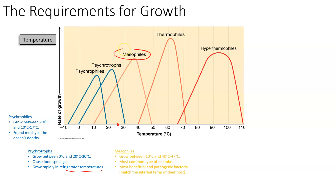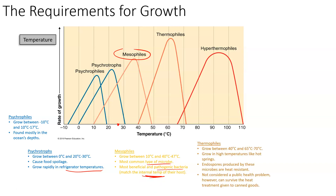Mesophiles grow between 10 and about 47 degrees Celsius. They are the most common type of microbe, and they are the most beneficial and pathogenic bacteria on the planet because their optimal temperature matches the internal temperature of their host. These are the bacteria that are causing disease in animals and humans.